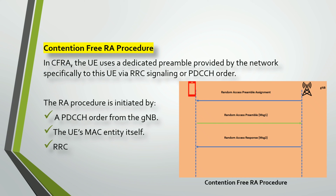The random access procedure can be initiated by several things: a PDCCH order from the gNodeB, the UE MAC entity itself, or by RRC. In the contention free RA procedure diagram, the gNodeB sends the RA preamble assignment, the UE sends Message 1, and the gNodeB responds with Message 2.